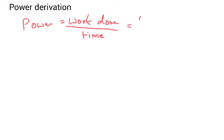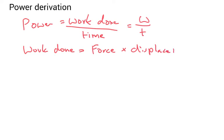So let's just call that W over t, but work done is equal to force times displacement. So W equals F times S.